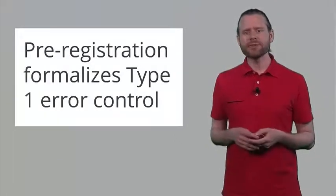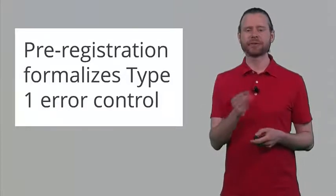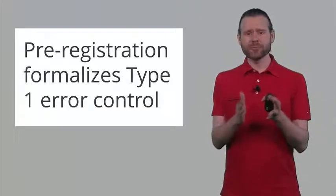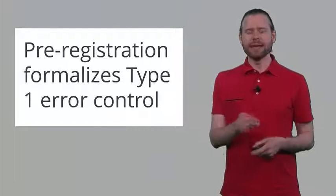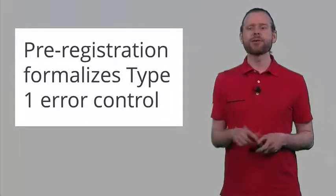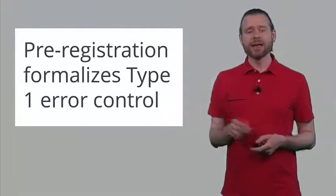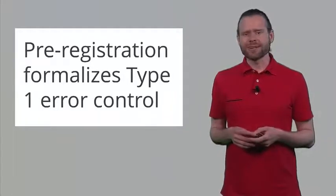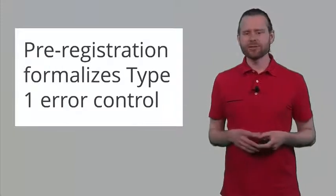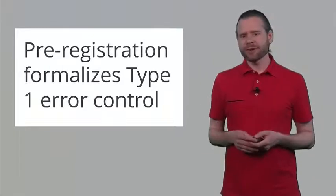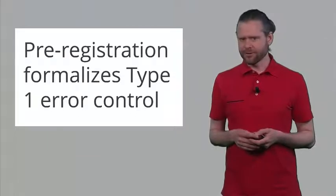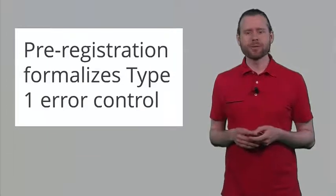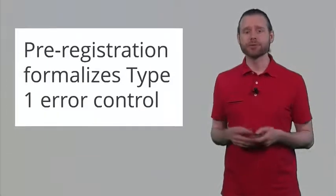So in this way, pre-registration formalizes the type 1 error control. You have a very specific plan that you set out to do, and all the tests that you do that follow your pre-registered hypothesis have a controlled type 1 error rate. For other analysis, more exploratory analysis, you can test anything that you'd like, but in this case your error rate is inflated to an unknown level, so you don't really know the probability that you're making a false positive result.